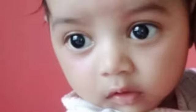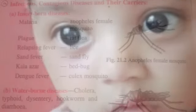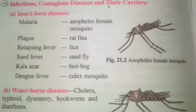The topic for today is infections and contagious diseases and their carriers. Today we will discuss what infections are, which diseases are caused through infection, and what their carriers are — meaning through what things we get which diseases. So first of all, we will discuss diseases transmitted through insects.